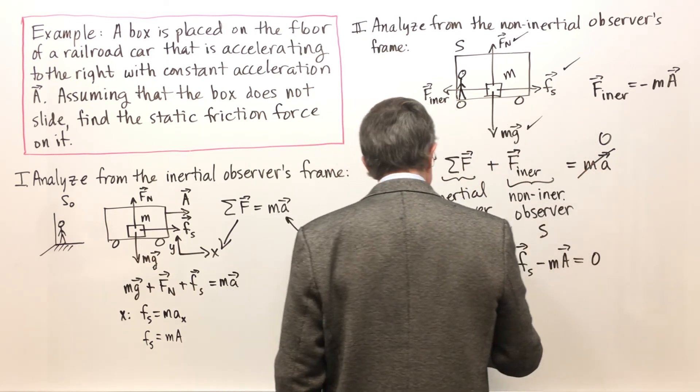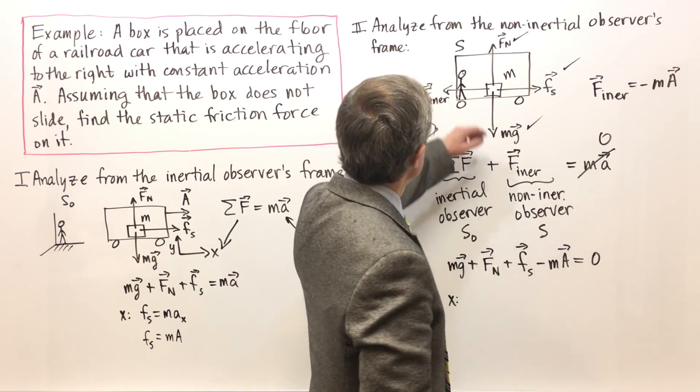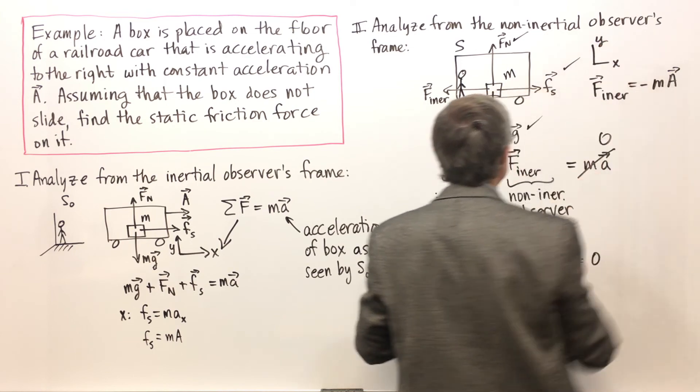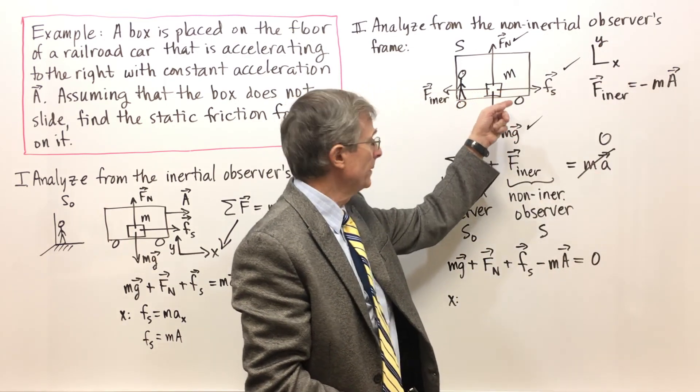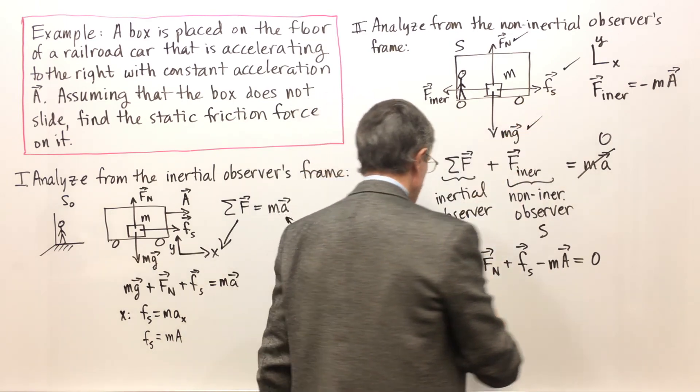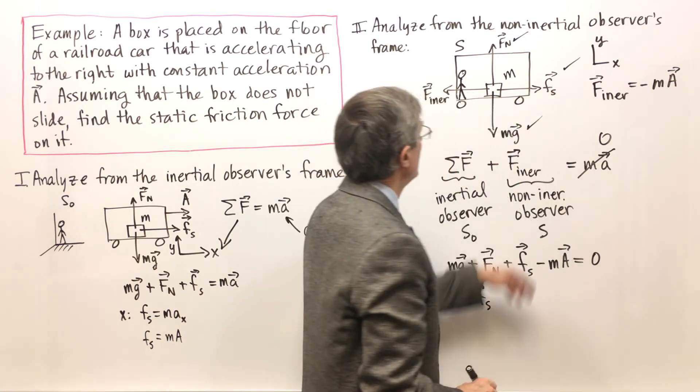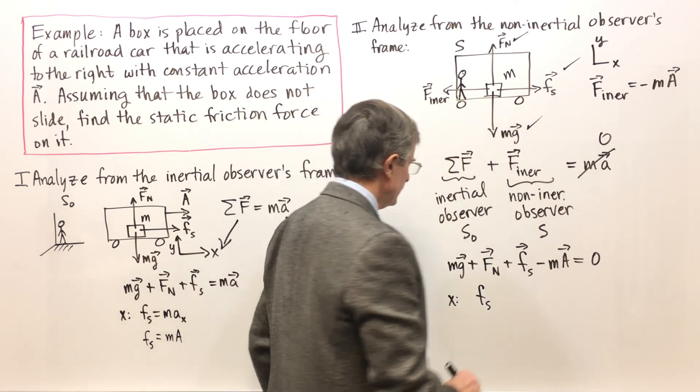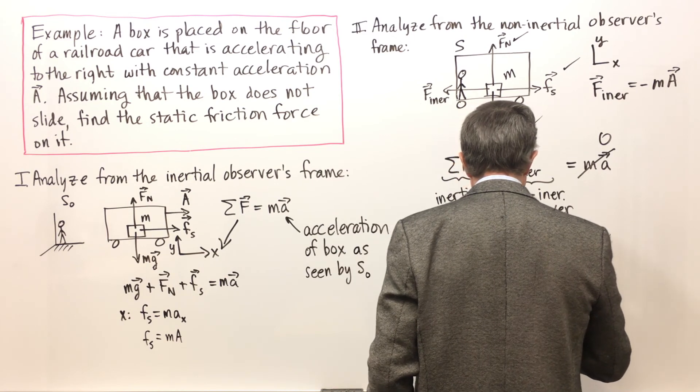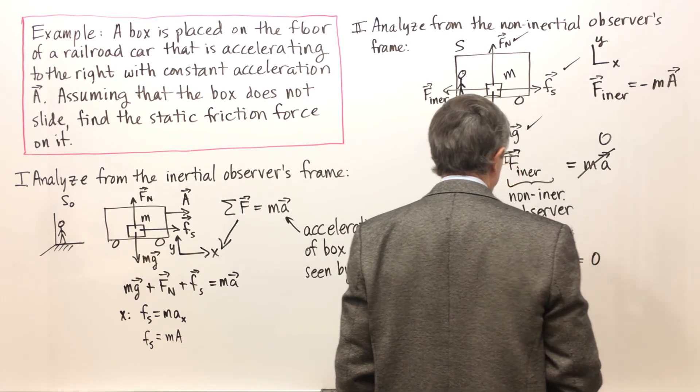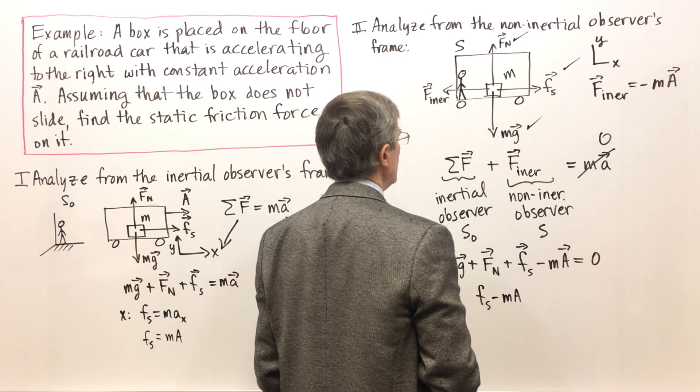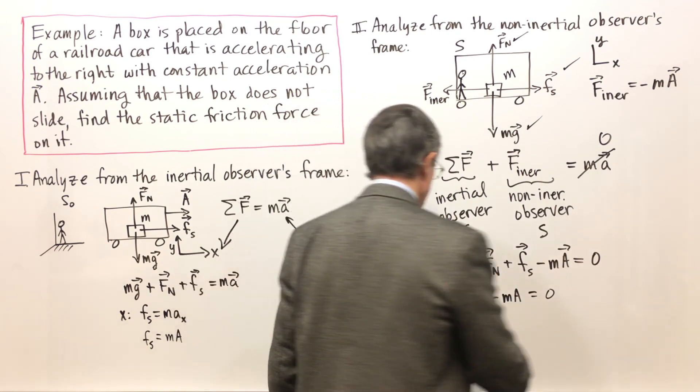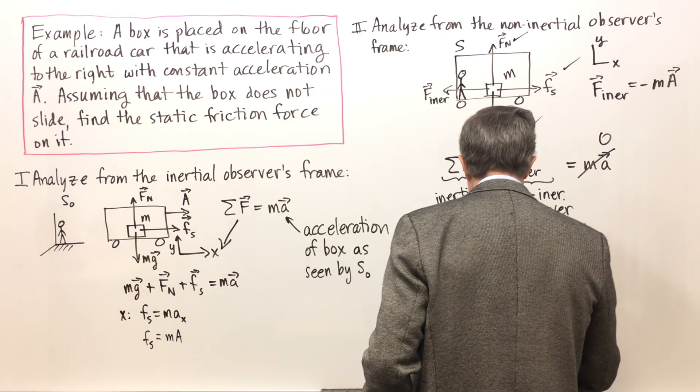Well, if we want to look at just the forces in the x direction, let's take a coordinate system that looks like that x, y, and in the x direction, I'll have the x component of the static friction pointing in the plus x direction. And the x component of this inertial force will be in the negative x direction. And that's going to equal zero, because these other two forces are in the y direction. So that says that F_s equals Ma.